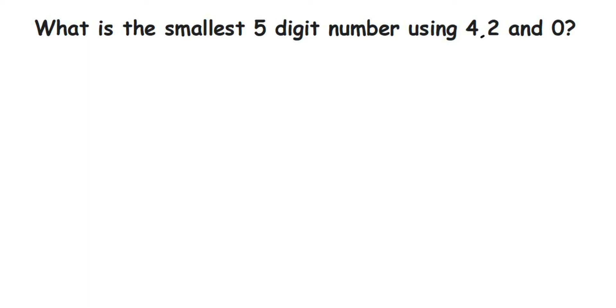Hey everyone, here's a question from numbers asked by Preet. The question is: what is the smallest five-digit number using four, two, and zero? We have to form a five-digit number using these three digits. Since we're given only three digits, it means we can obviously repeat the numbers.